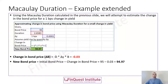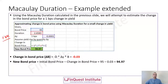Now let's use Macaulay duration to estimate how much a bond price will be impacted by a given change in yield. Using the Macaulay duration of 2.6583 and a bond price of 95, we assume the yield change to be one basis point. This one basis point change relates to a concept called PV01 — the present value impact of a one basis point change in yield.